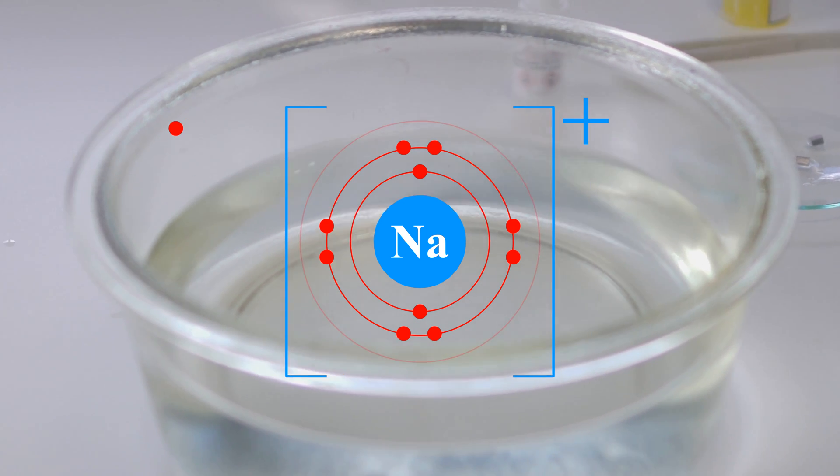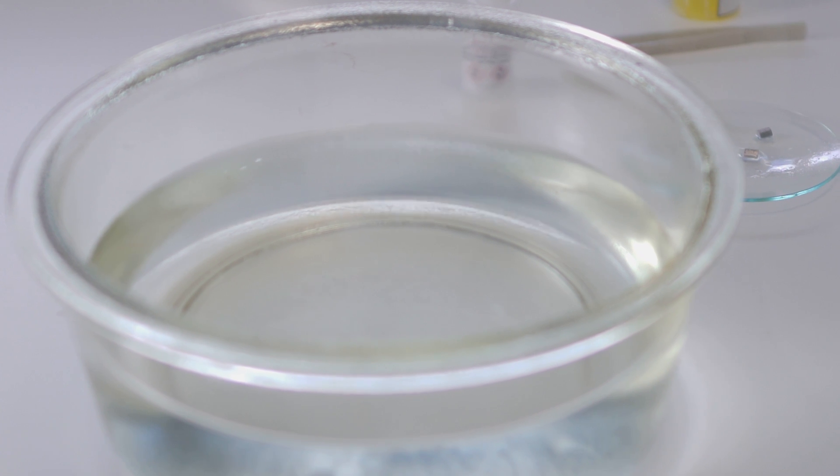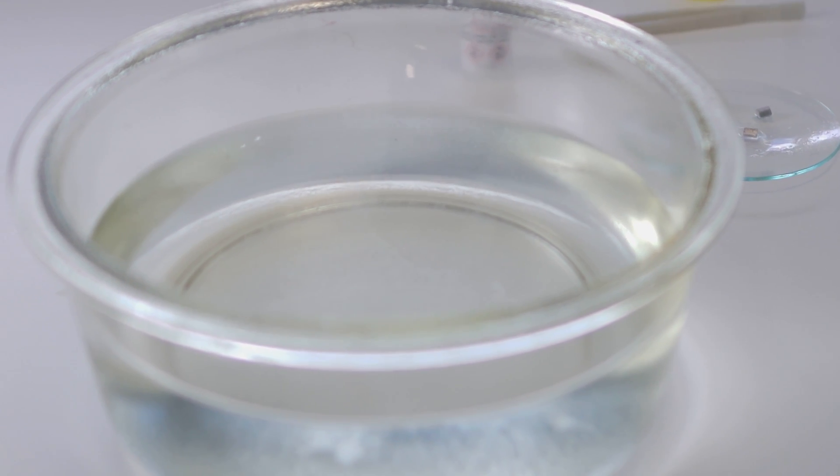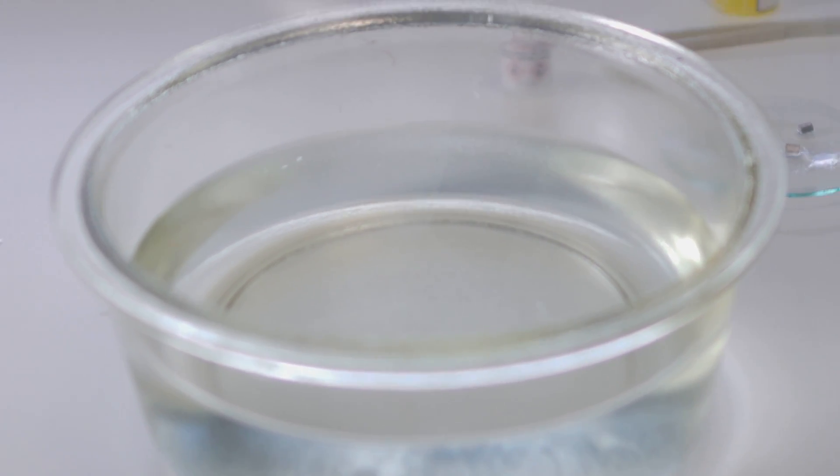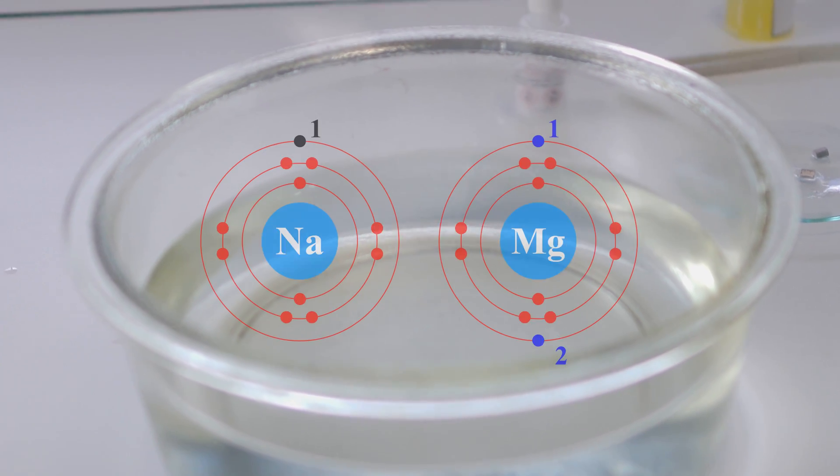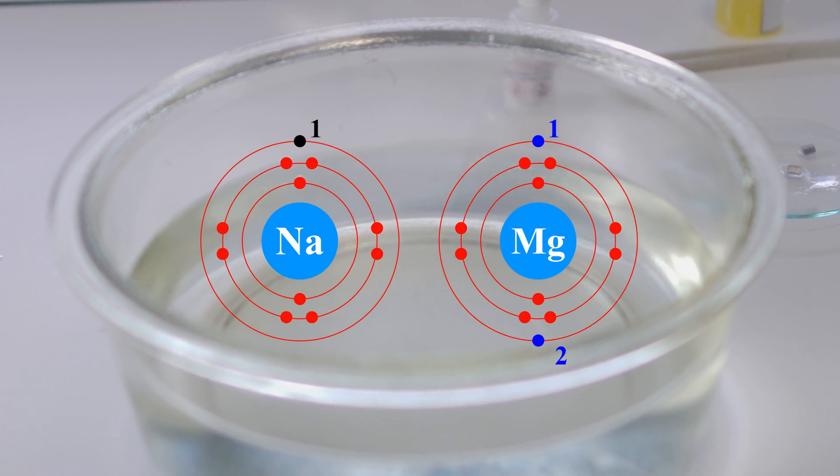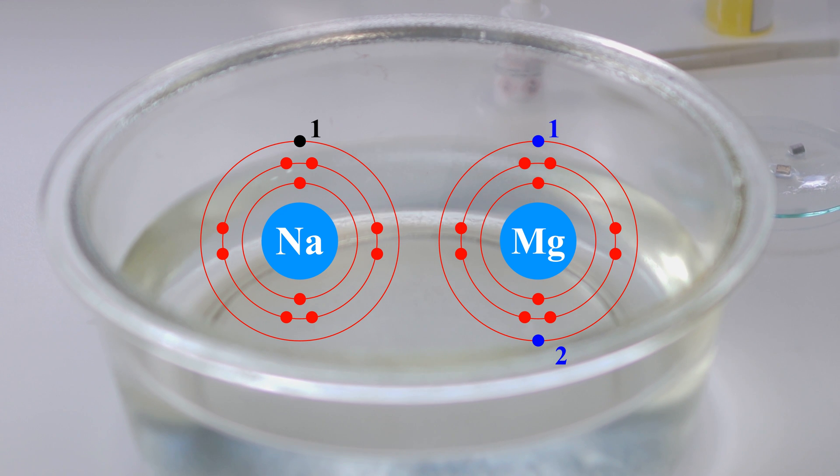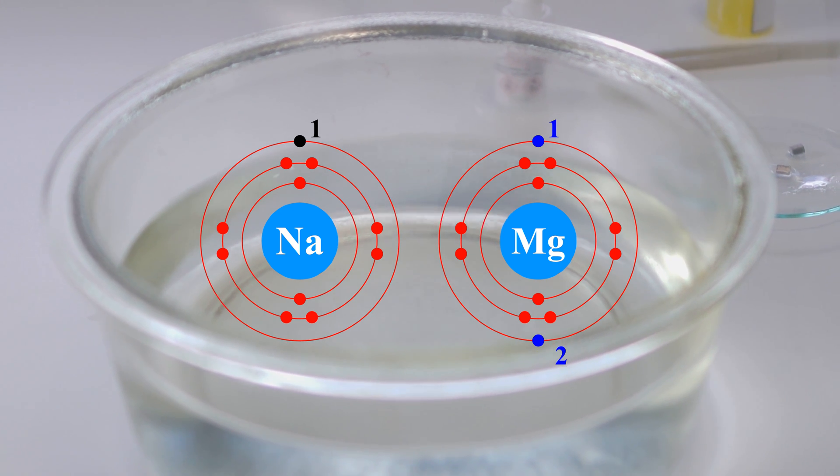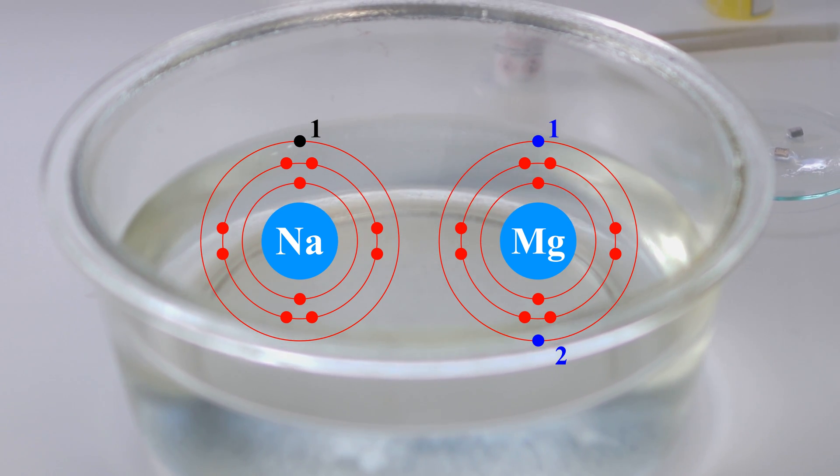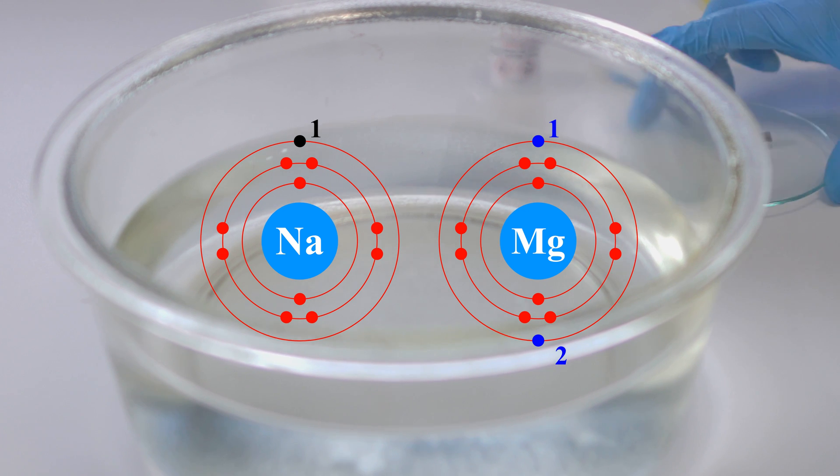Compared to other members of the same period on the periodic table, for example next to sodium we have magnesium, and yet magnesium reacts much more slowly. That's because it has two electrons. It's a little bit more difficult to throw those two electrons away compared to just throwing away one.